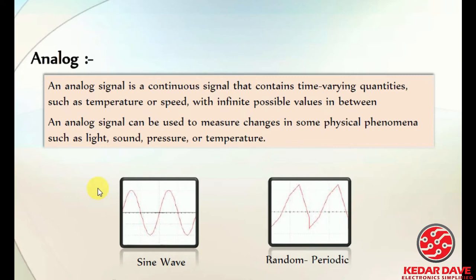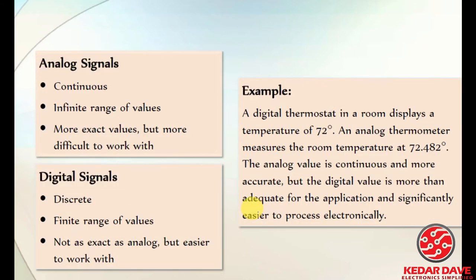This is an analog signal — it is a continuous signal that contains time-varying quantities such as temperature or speed, with infinite possible values in between. At any time you can see many values being attained, varying randomly or periodically. Analog signals are continuous, whereas digital signals will be discrete.